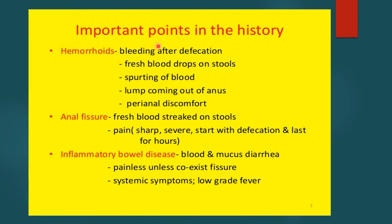Good history-taking is key to diagnosing lower GI bleeding. Hemorrhoids usually bleed after defecation — fresh blood drops on stools, sometimes frank spurting, occasionally with a prolapsing lump. Anal fissures present with fresh blood streaked on stools and sharp, sometimes severe pain starting with defecation and lasting hours after. Inflammatory bowel disease classically presents with blood, mucus, and diarrhea, painless unless a co-existing fissure is present, and may have systemic symptoms such as low-grade fever.